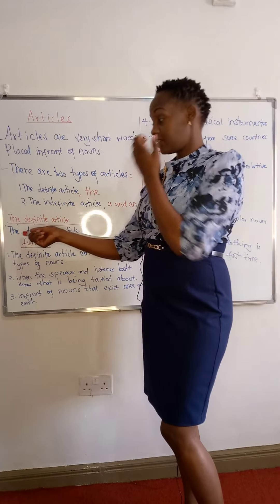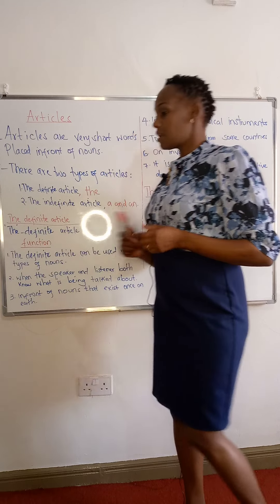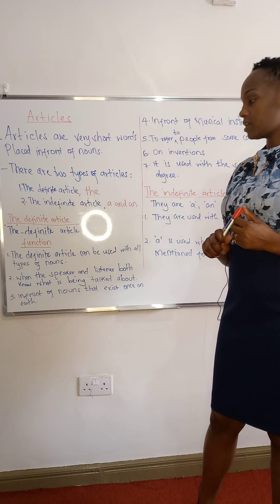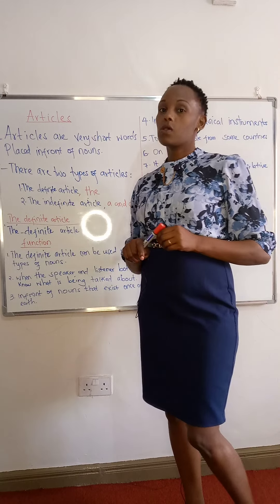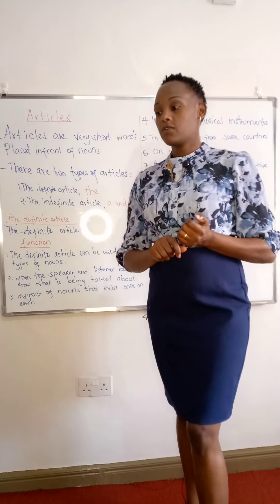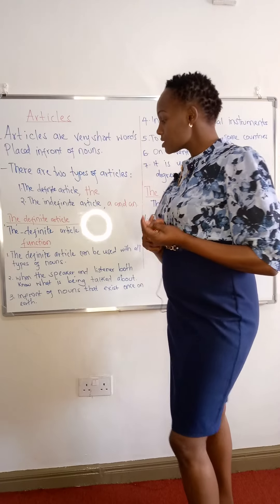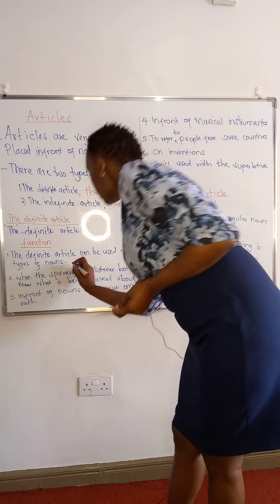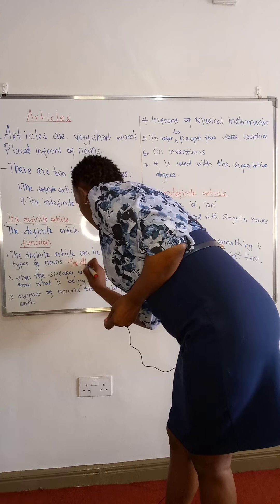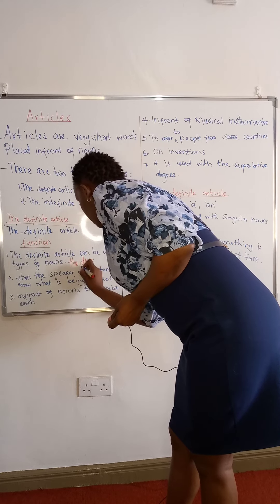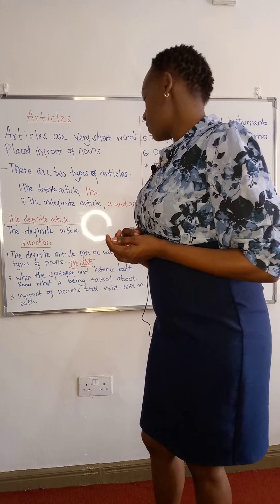We have the definite article, which is 'the', and it has a few functions. The first function: the definite article can be used with all types of nouns. For example, when we are talking about count nouns, we have 'the disk'. With the count noun 'disk', we can use the definite article.